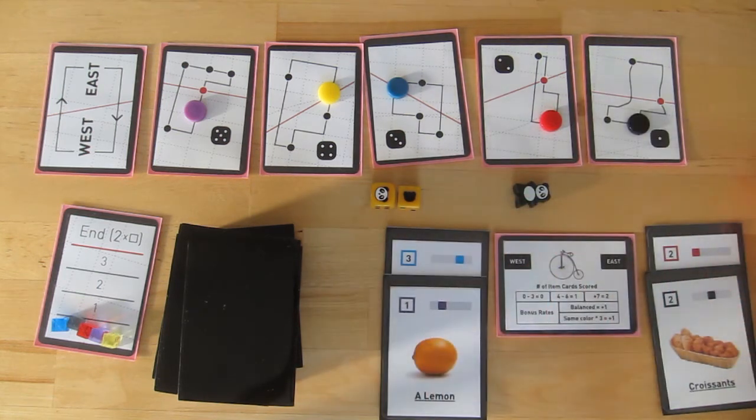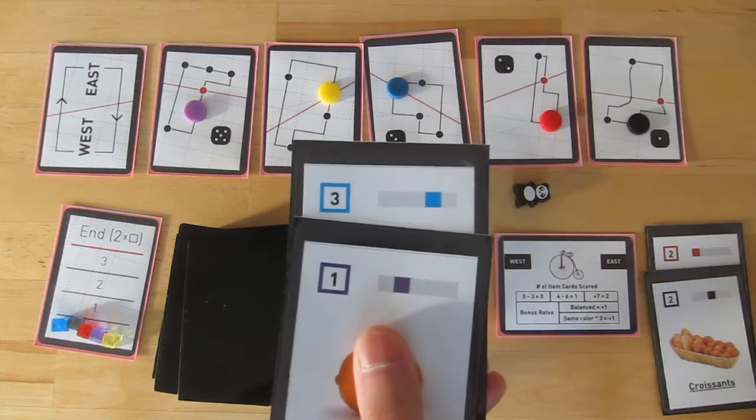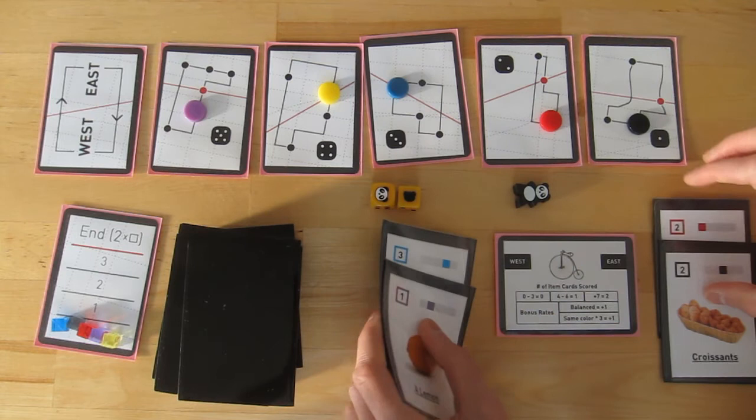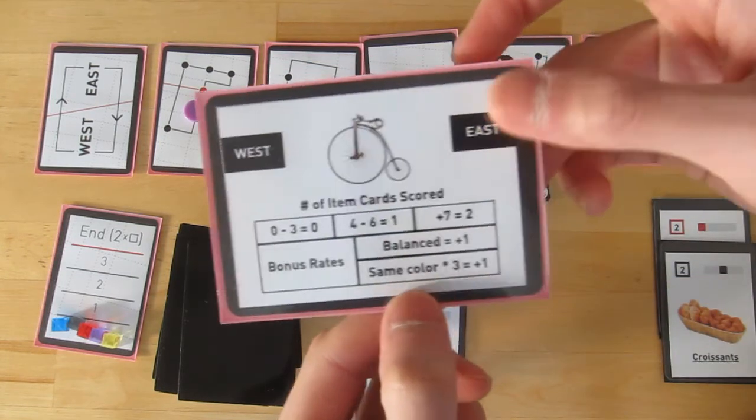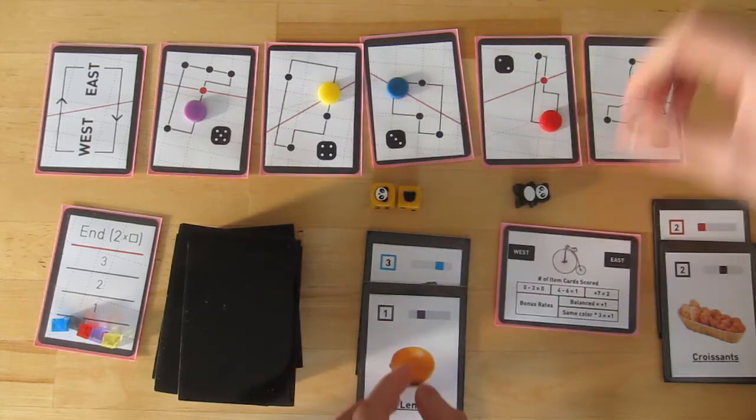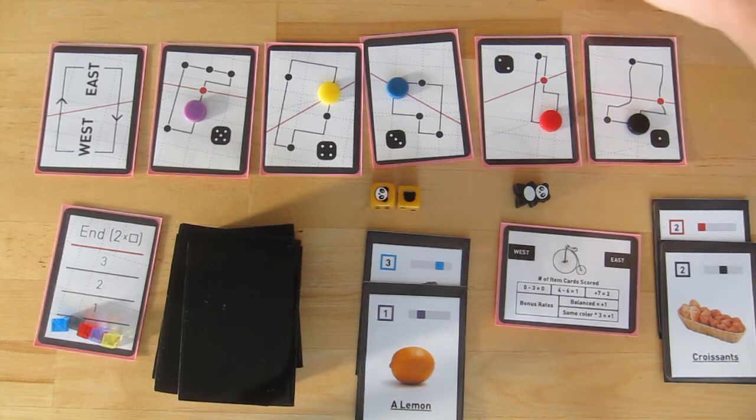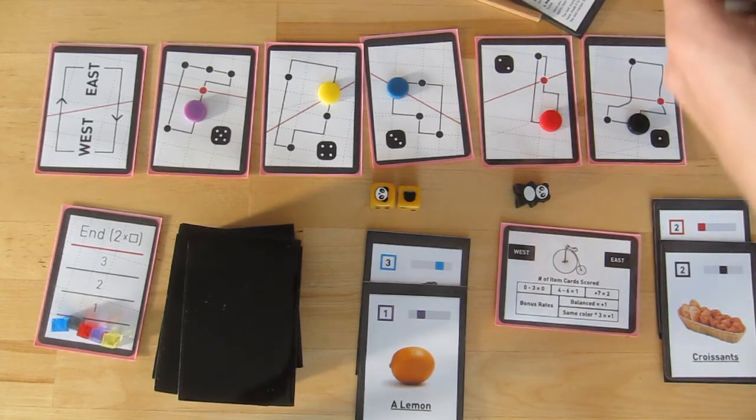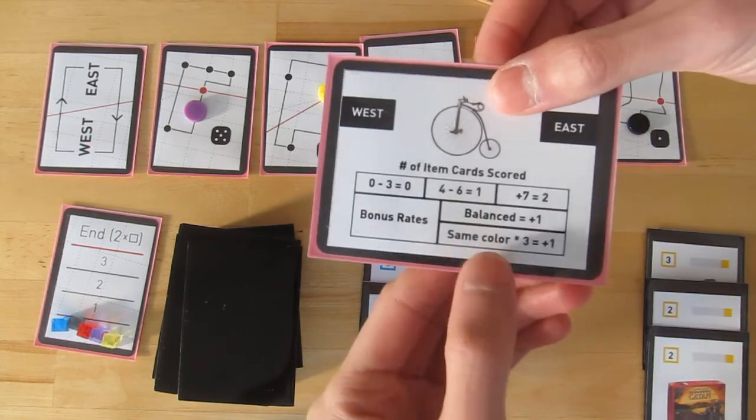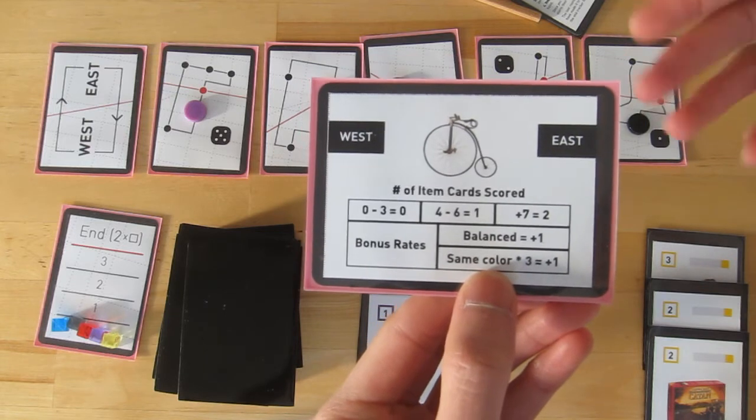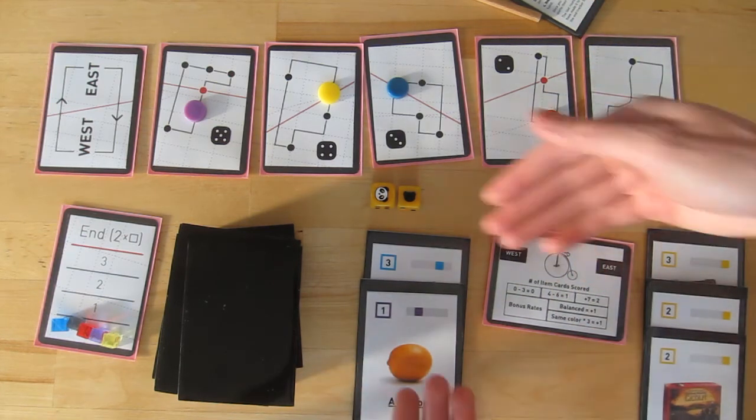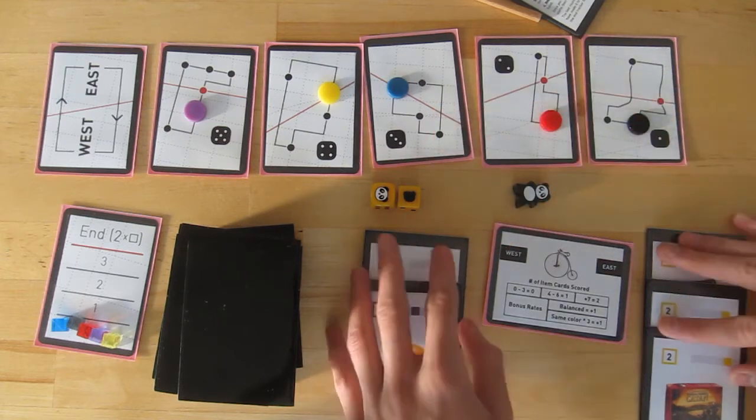Balanced means when the two numbers are equal to each other, the sum of the two sides. So right now, over here, we have a total of 4. And on this side, we also have a total of 4. So this would be equal, and it would allow me to get the plus 1 for the balanced rate. Now we got the same color bonus rate. So here's the same color times 3 equals plus 1. So if I have on one side the same color, like, I'm going to swap these out, like these 3 yellows over here, I suddenly get a plus 1 to my cards that I can score away. If I had 3 blues on this side, I would get plus 2. So I would have the yellow side that gives me plus 1, and then I would have the blue side that gives me plus 1.